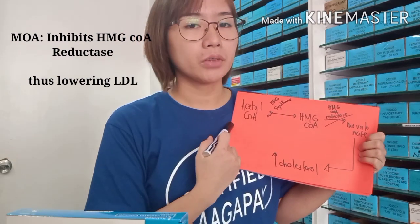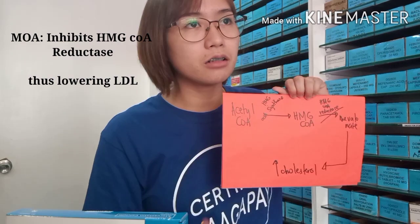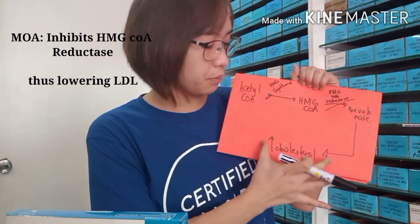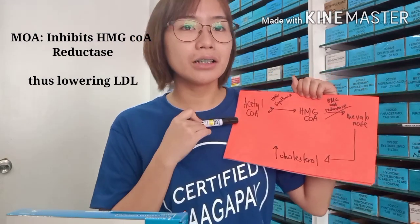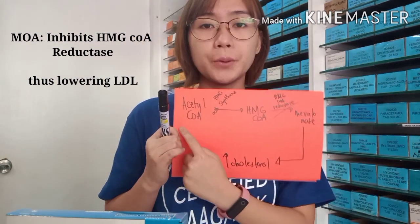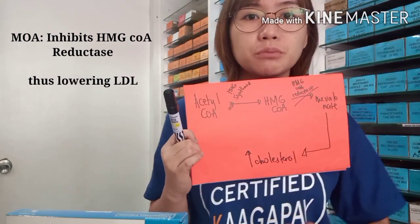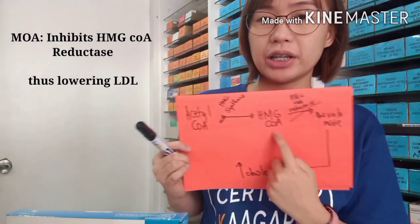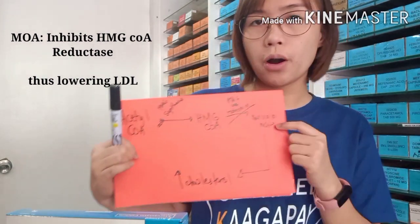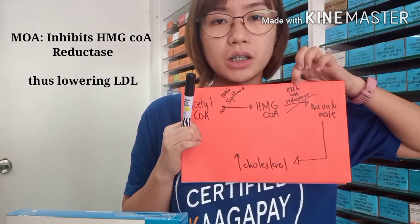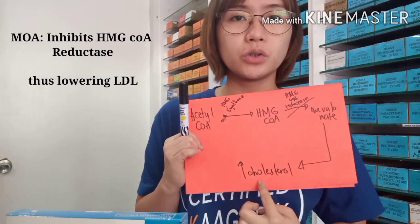In our body, we have acetyl-CoA. How does cholesterol get synthesized or produced? Cholesterol is being produced because of this pathway: the acetyl-CoA in our body is converted by HMG-CoA synthase into HMG-CoA. Then the HMG-CoA is converted into mevalonate by HMG-CoA reductase.